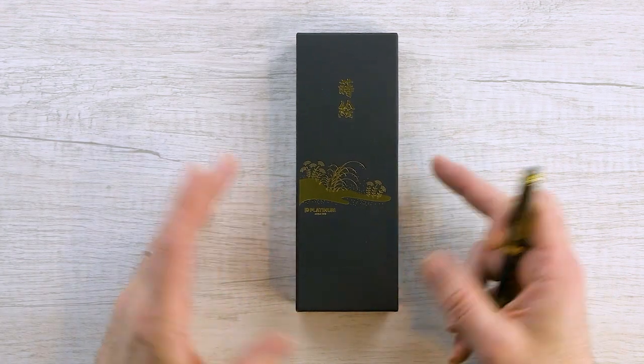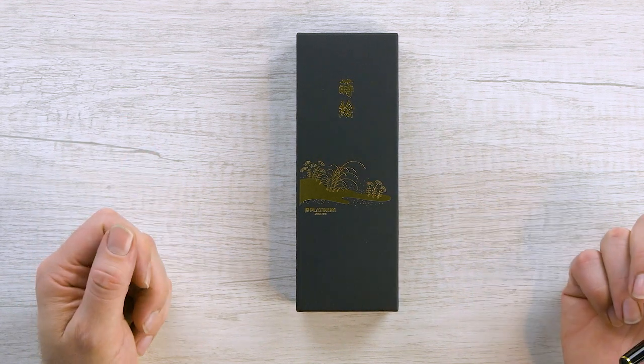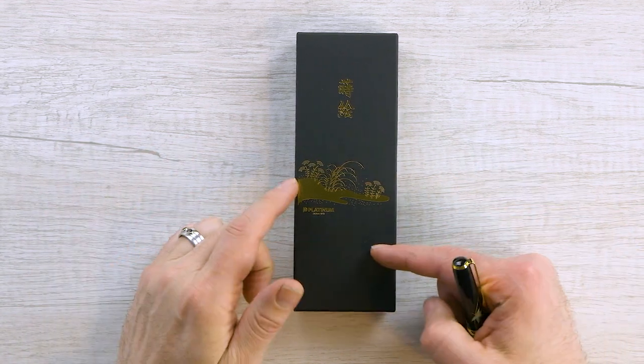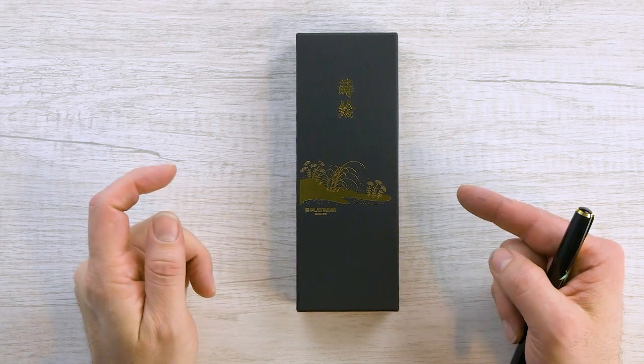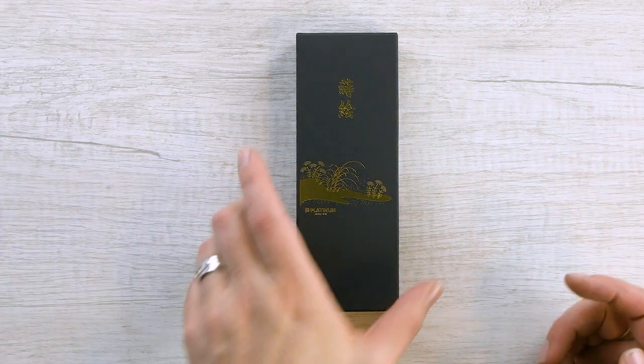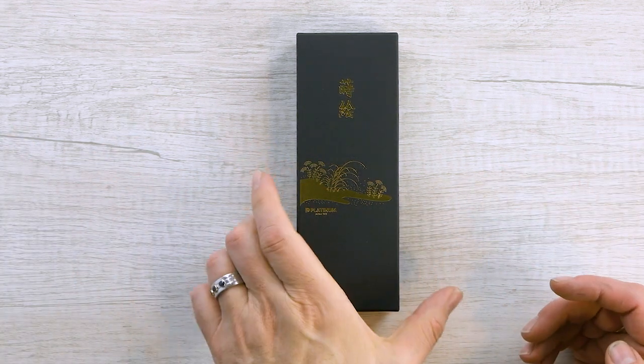And real quick, this is the other box that sometimes the Classic Maki-A comes in. It's a lovely little scene on the front. But just in case, it looks like they may be transitioning towards this style of box.